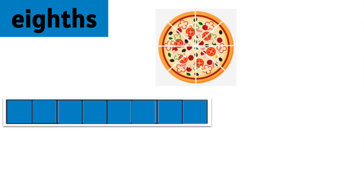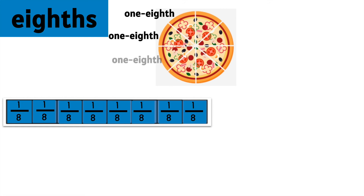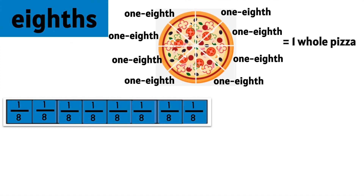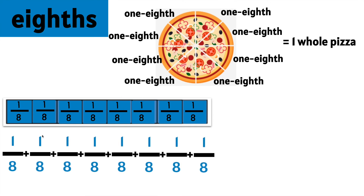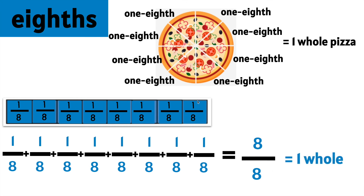Eighths. We have a pizza that is split or cut into eight equal parts, and we have a whole that is also cut into eight equal parts. Each one is worth one eighth, just like each slice of pizza is worth one eighth. Together, if you have all eight eighths, you have one whole pizza. If you add up all these eighths you will end up with eight eighths, and if you have all eight parts then you have one whole.